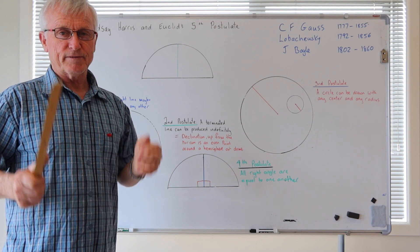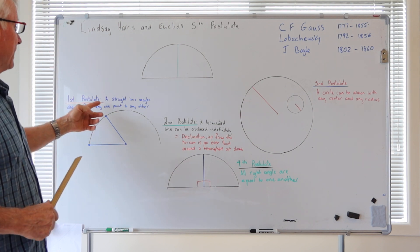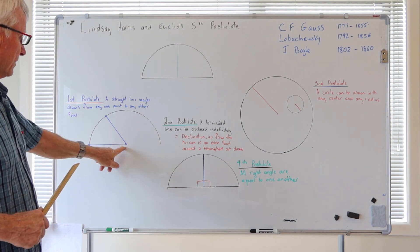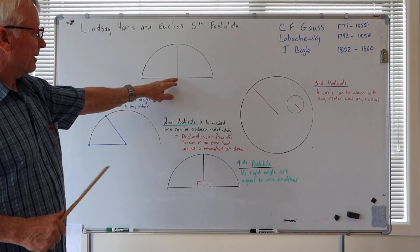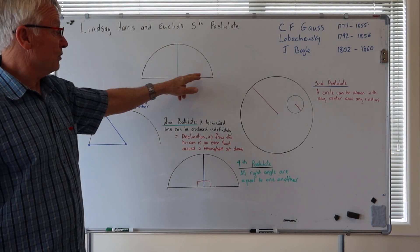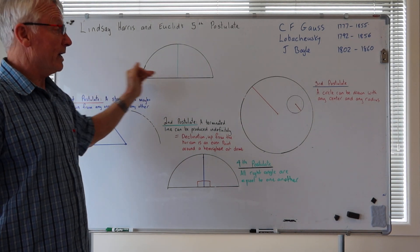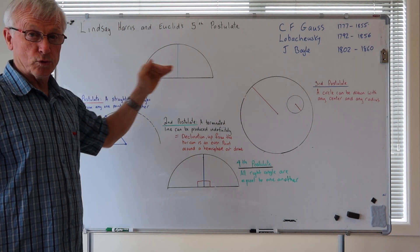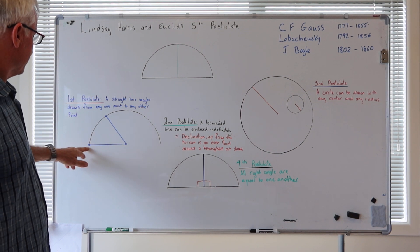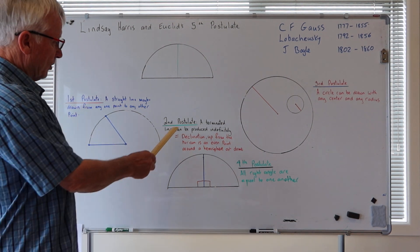The first postulate is: a straight line may be drawn from any one point to another point. So we will start off, the zenith man is zenith to his arc of horizon. That's where he views, how he views the whole sky around him, a dome, 180 degrees, 360 degrees all around him. That's his horizon. So from point to point, any point to another point, one point, this point.